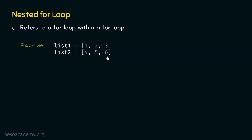We want to print these items in a specific order: 1 4, then 1 5, then 1 6, then 2 4, 2 5, 2 6, then 3 4, 3 5, and 3 6. This means we take one item from List1 and then one item from List2. To achieve this kind of output, we can use the Nested For Loop, which makes this order possible.